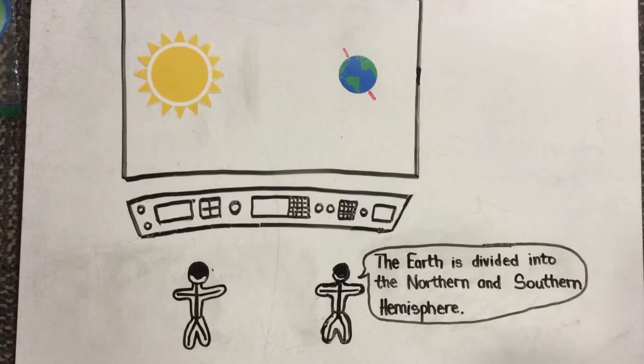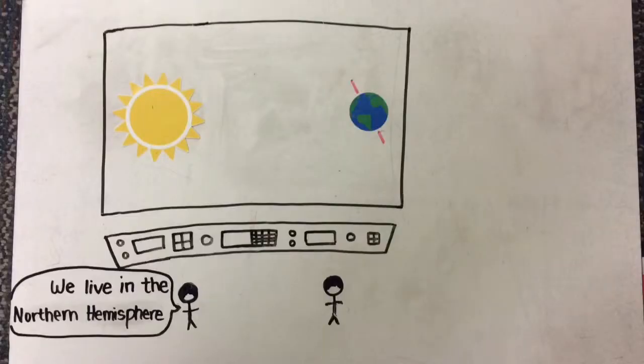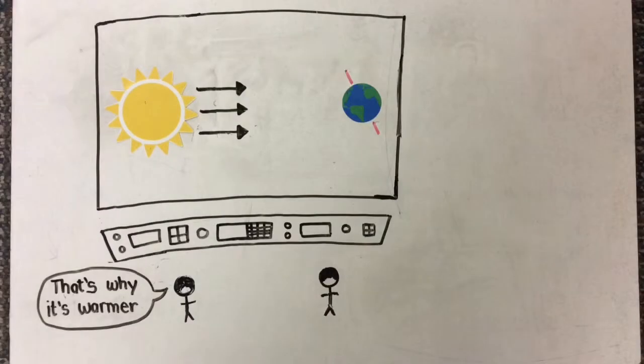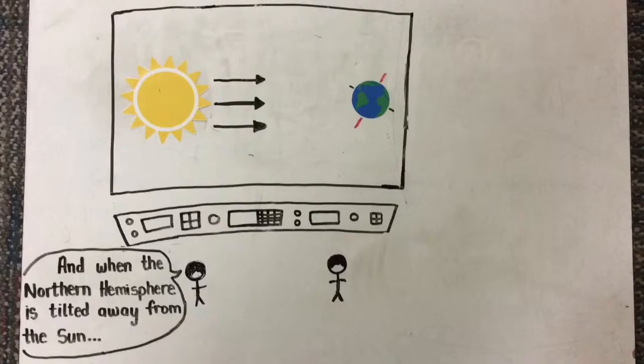The Earth is divided into the Northern and Southern Hemisphere. As Earth revolves around the Sun, the axis points toward the same direction. This causes different parts of the Earth to get the Sun's direct rays. In summer, the Northern Hemisphere is tilted toward the Sun and gets more direct sunlight. That's why it's warmer.